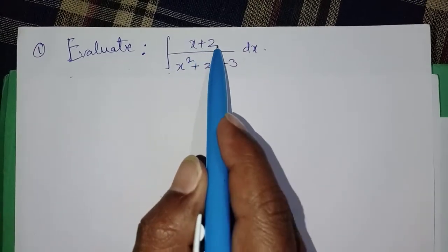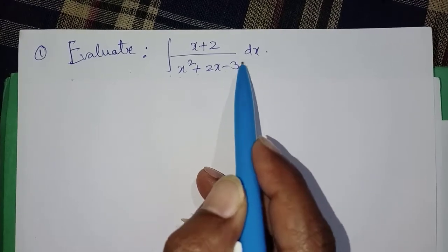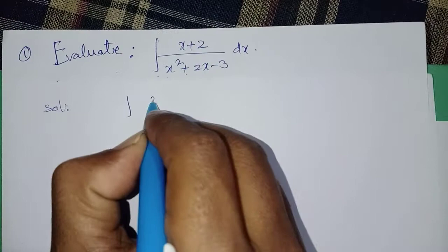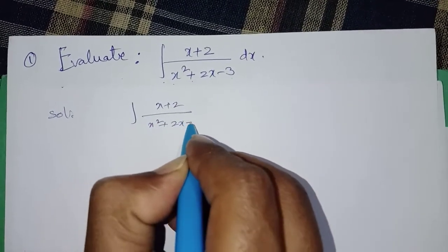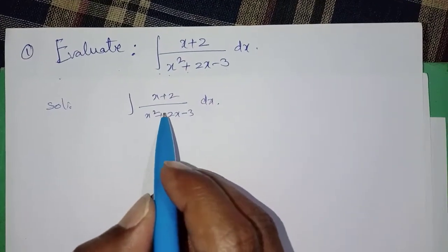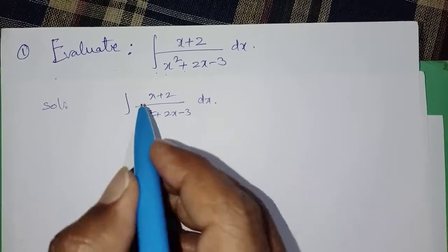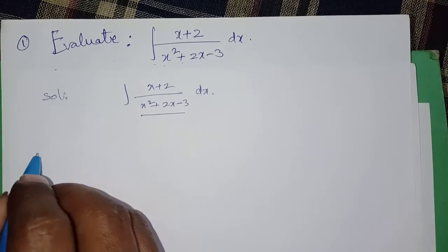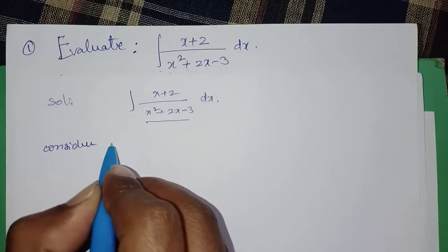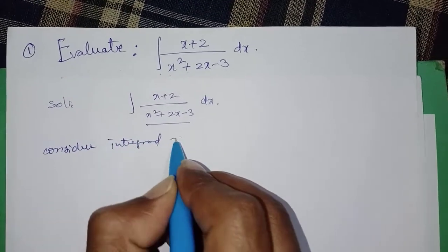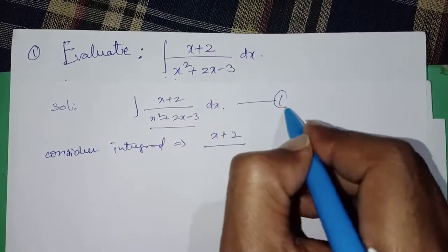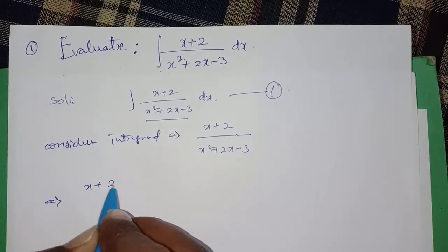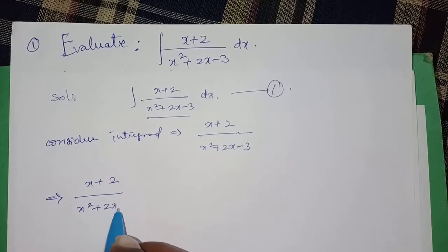Evaluate the integral of (x+2) upon (x²+2x-3) dx. The given question is the integral of x plus 2 upon x square plus 2x minus 3 dx. We can solve this by using the partial fraction method. For that, let us first of all consider the integrand, which is x plus 2 upon x square plus 2x minus 3. This is called the integrand.